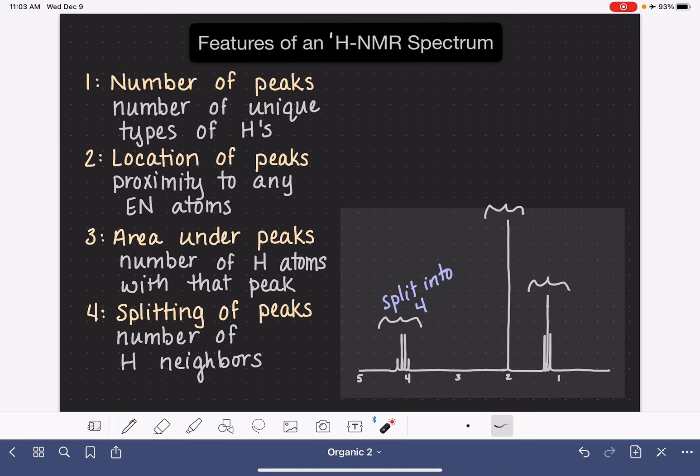And that's going to give us some information about how many hydrogen atoms are near the hydrogen atoms that generate this peak. This peak right here has not been split at all, so there's no splitting, which is not uncommon. This little peak down here has been split into three, so this one is split into three.